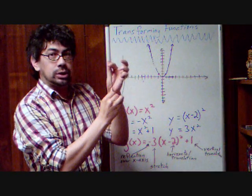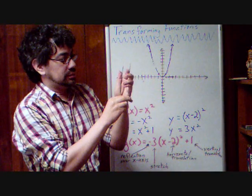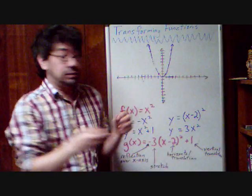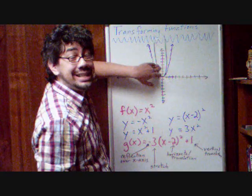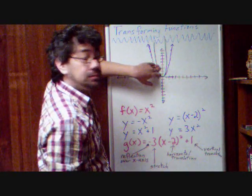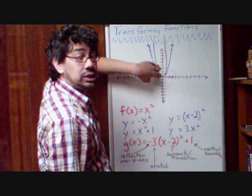So this, I'm going to do a stretch. I want to make it narrower, so I'm stretching up on it. Now this is just a very rough approximation, but the idea is that you should get it to be narrower. And that's y equals 3x squared.